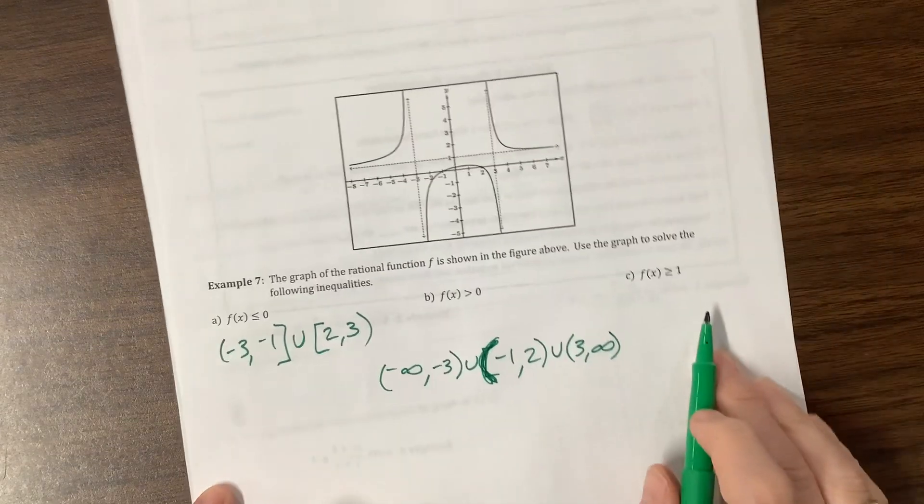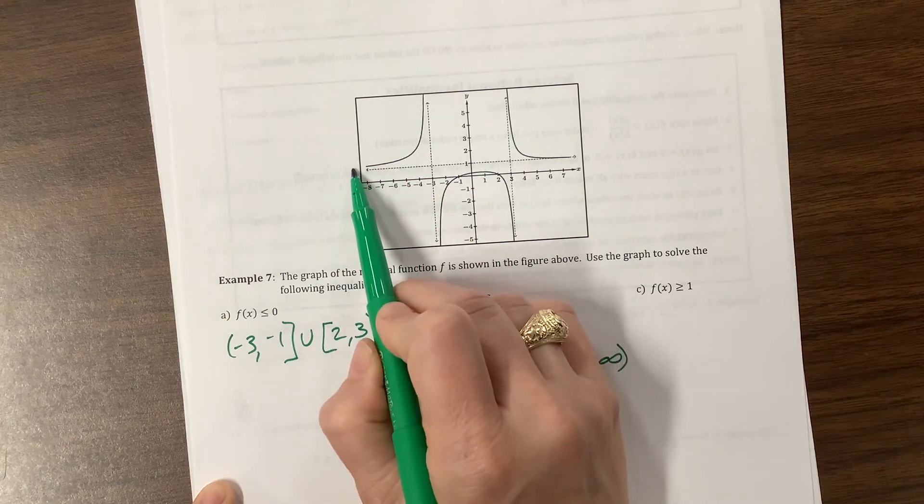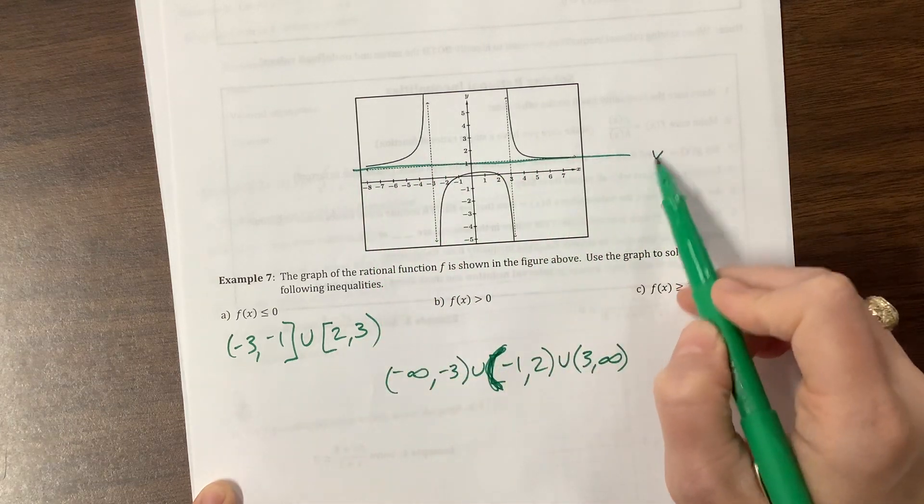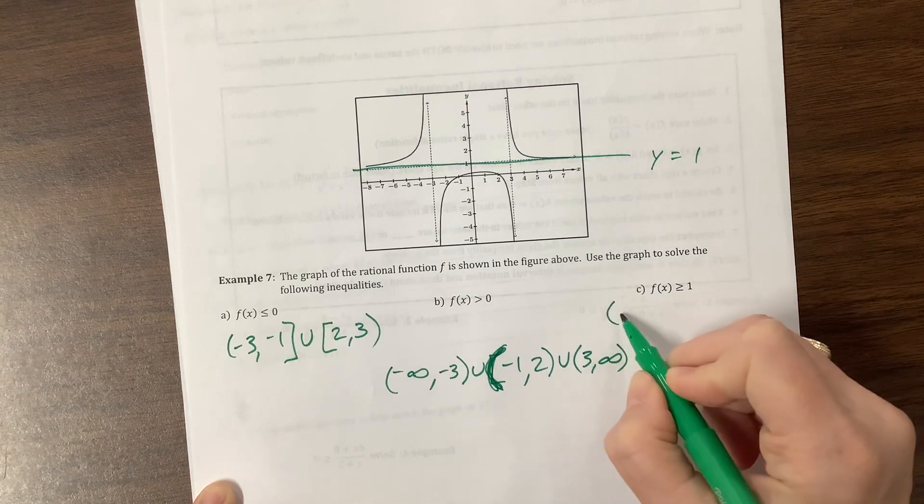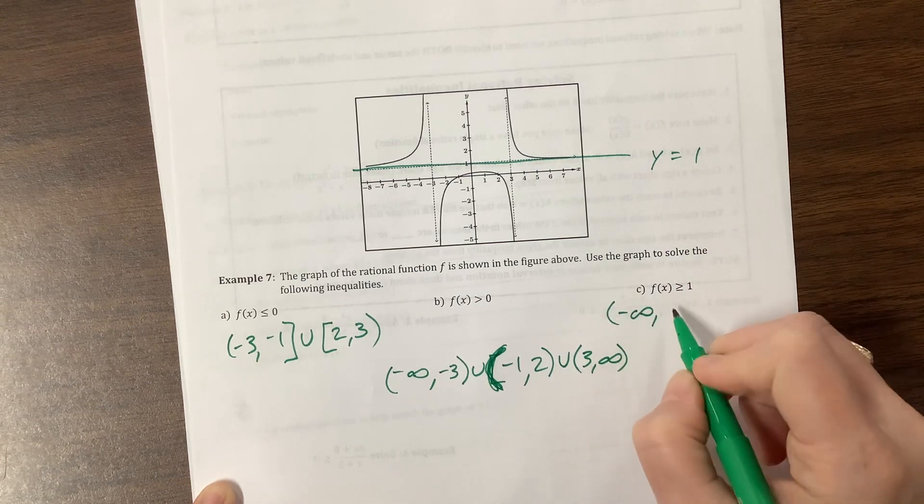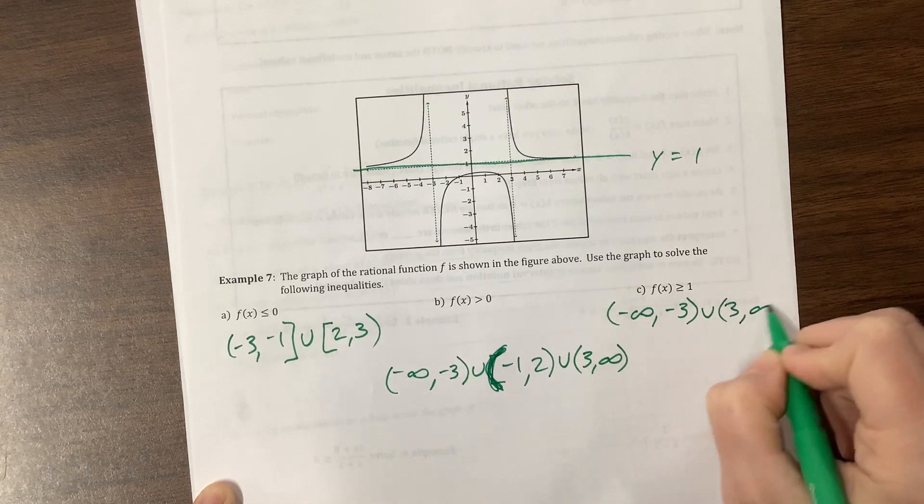The next one is kind of interesting. Where are we greater than or equal to 1? Well, that was very nice. They gave us an asymptote of y equals 1. So where are we above the asymptote? Well, from negative infinity to negative 3. And then again from 3 to infinity.